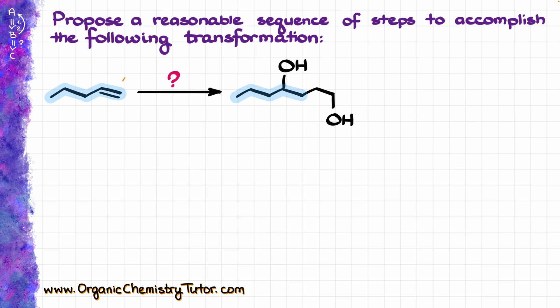I have 1, 2, 3, 4, and 5 carbons in my starting material, while in the final product I have 7 carbons. This means that we are looking at making a new carbon-carbon bond right over here in our structure.